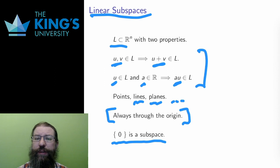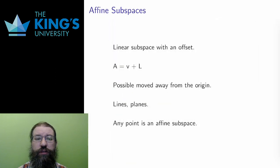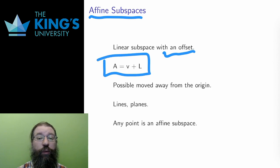What if I wanted a subspace that didn't go through the origin? Well, like I did with spans in the last video, I can add an offset vector. An affine subspace is a linear subspace with an offset. I can write this as A, the affine subspace, as V plus L, where V is the offset and L is a linear subspace.